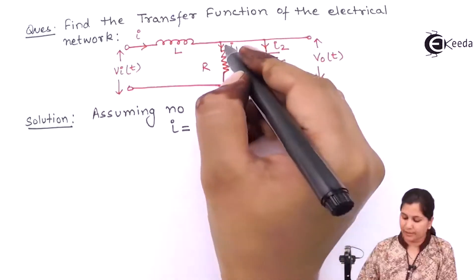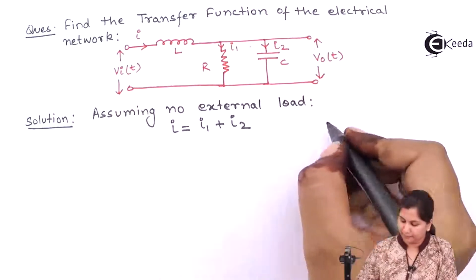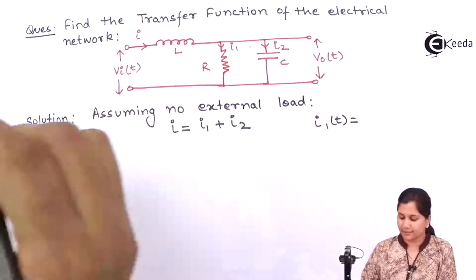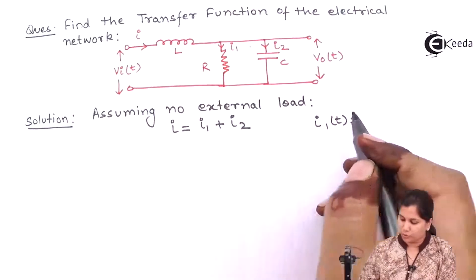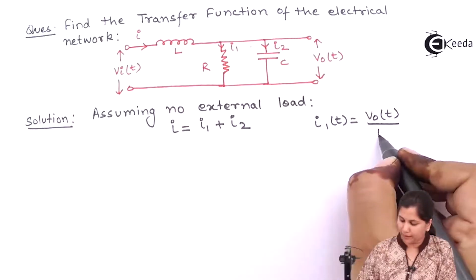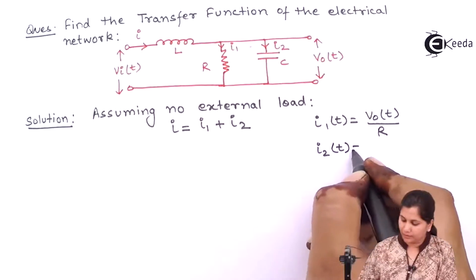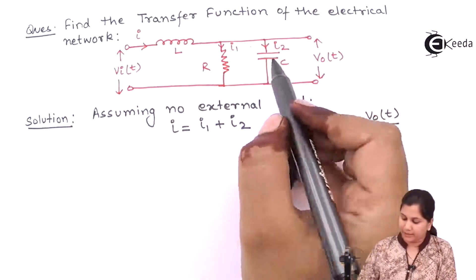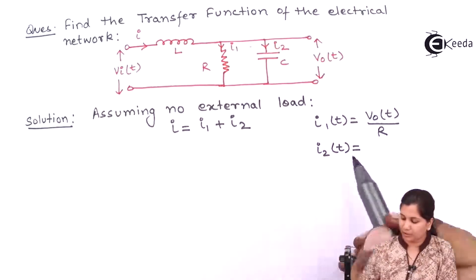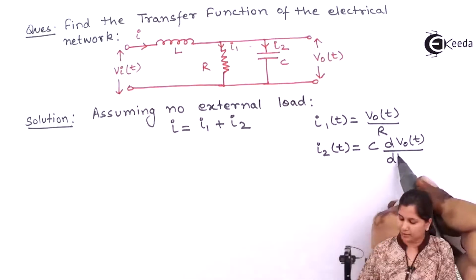I1 is the current across the resistance R. The voltage drop across the resistance R is V0(t), so the value of I1 will be V0(t) by R. Now the value of the current I2 — it is the current across the capacitor C. The voltage across the capacitor is V0(t), so I2 will be given by C·dV0(t)/dt.